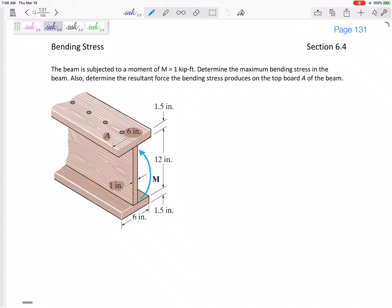So let's look at this. This beam is subjected to a moment of one kip foot. So they give us the moment, don't have to calculate that. Determine the maximum bending stress in the beam. Also determine the resultant force the bending stress produces on the top board A of the beam. So we'll look at that later.